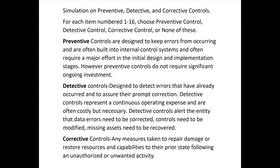Preventive controls do not require significant ongoing investment. Detective controls, by contrast, are designed to detect errors that have already occurred and to assure their prompt correction. Detective controls represent a continuous operating expense and are often costly but necessary — these costs are ongoing, unlike preventive controls where all the effort and cost is upfront. Detective controls alert the entity that data errors need to be corrected or controls need to be modified, or missing assets need to be recovered.